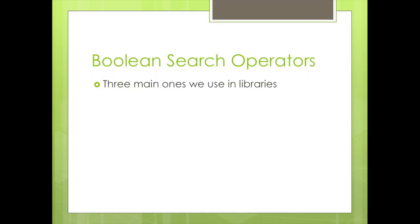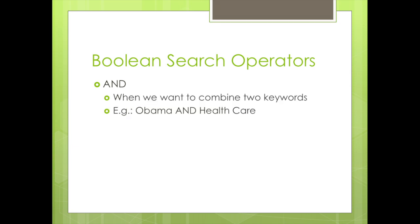In library searches, there are three main Boolean operators — that's what we call words — that you might find helpful: AND, OR, and NOT. AND is something that we use when we want to combine two of the keywords you already generated. If you're writing a paper about Barack Obama's policies on health care, you would type Obama AND, in capital letters, health care. That way, you're not just getting results about Barack Obama, and not just getting results about all health care, but instead getting articles that have both.